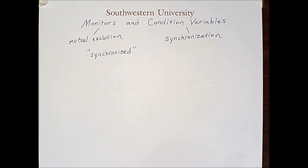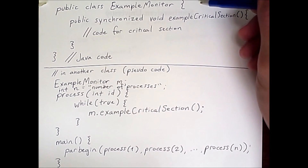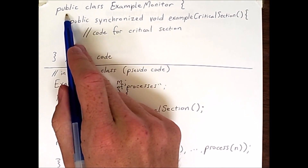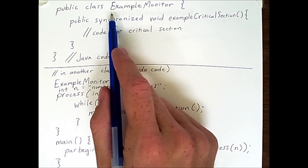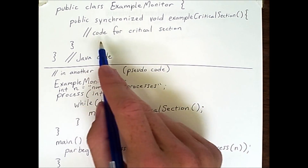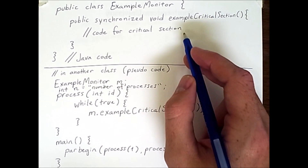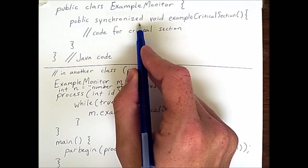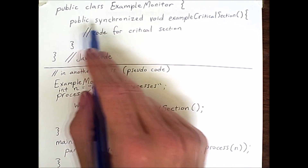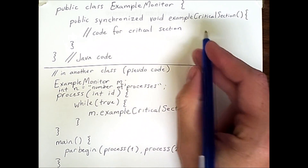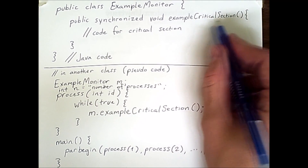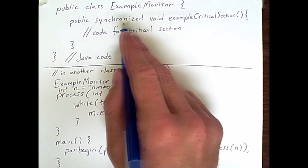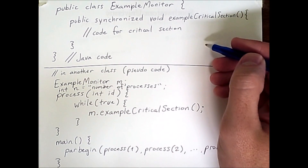The result looks something like this. This code in the top section is actual Java code. In Java, you can define a class with a name — in this case, the name is ExampleMonitor. We have methods, which are very much like functions in C or other languages, that optionally can have this synchronized keyword. So if you say public synchronized void exampleCriticalSection, that is the name of the method. The return type is void, and we've specified that this method is synchronized.